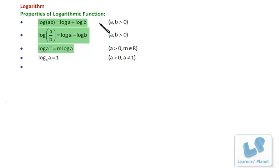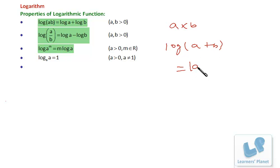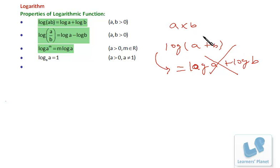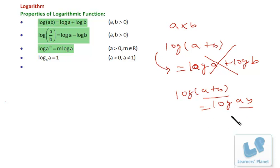Now here we take the properties of logarithm one by one. Log of a times b is log of a plus log of b. The common mistake students make is writing log of (a + b) as log a + log b — this is actually a blunder, don't do this. This is not at all true. In fact, log of (a × b) is log a + log b. How can a + b always equal a×b? It's not necessarily true.